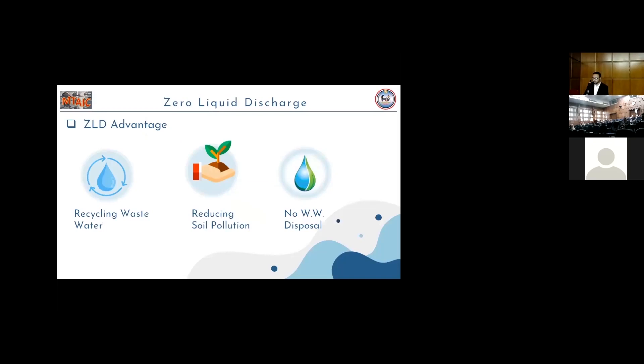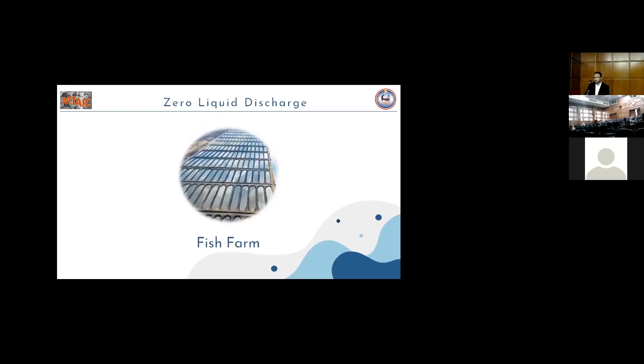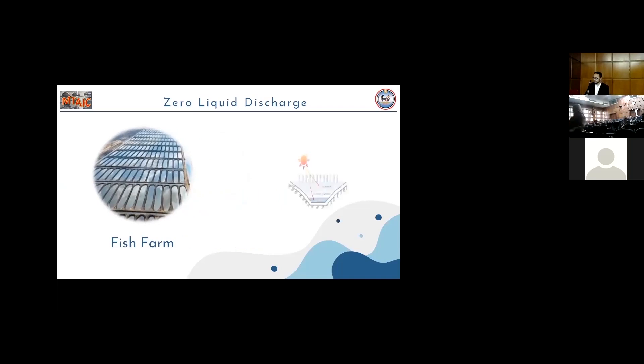By recycling the water, reducing saline pollution, and having no wastewater. The zero liquid discharge is usually an irrigation system. But due to the high salinity of water, a fish farm will be applied. And by time, the salinity increases, so aquaculture ponds will be used after the fish farm.